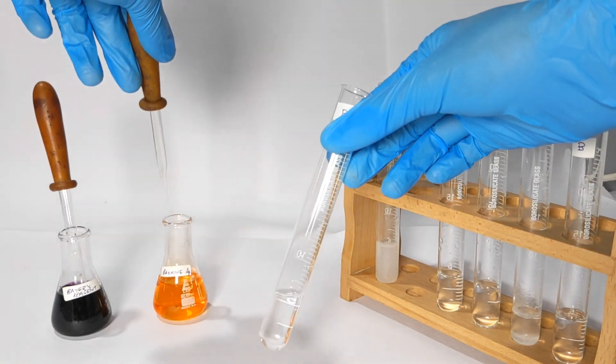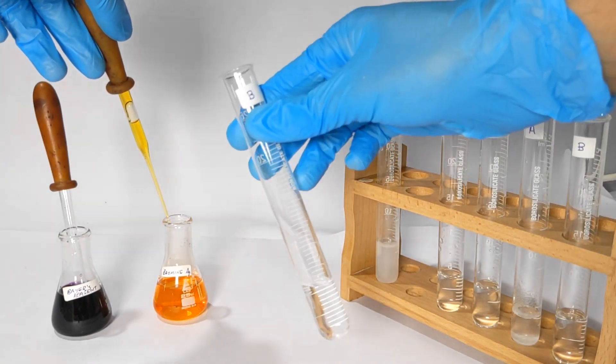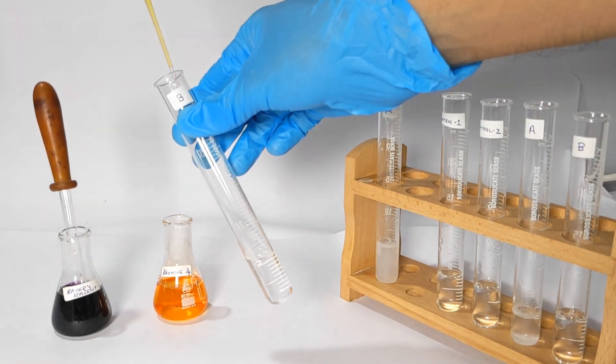Now we take the test tube marked B and repeat the process. You can clearly see how the color of the bromine persists in test tube B.